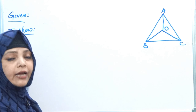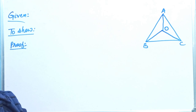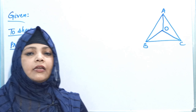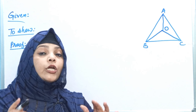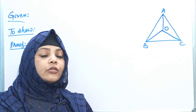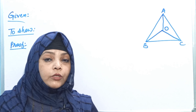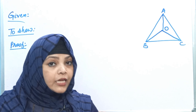Triangle ABC is an isosceles triangle. What type of triangle is it? It has two equal sides. Two sides are equal. So here AB and AC are the two equal sides.